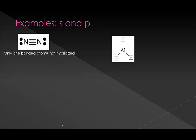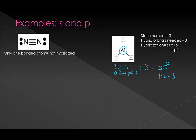Now let's go on to some real ones. Here we have AlH3. We'll just look at our central atom since the hydrogens aren't going to be hybridizing. Let's figure out its steric number. It has three bonds and zero lone pairs, which gives us a steric number of three.